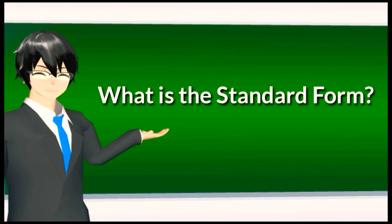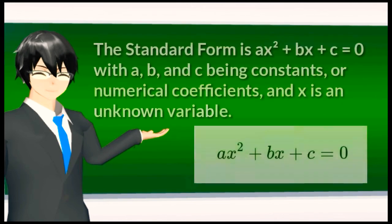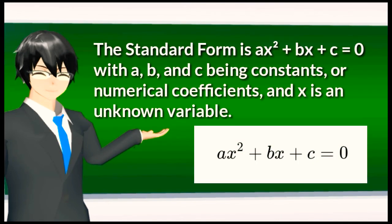What is the standard form? The standard form is: ax squared plus bx plus c is equal to 0. With a, b, and c being constants or numerical coefficients, and x is an unknown variable.